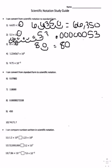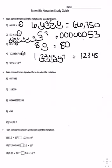For number four, you move the decimal five times — one, two, three, four, five — and you get one, two, three, four, five, six point seven.